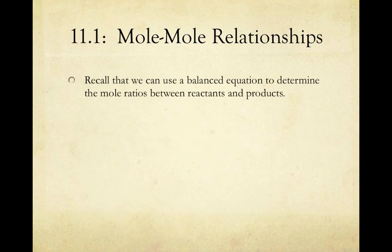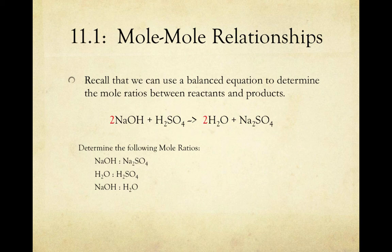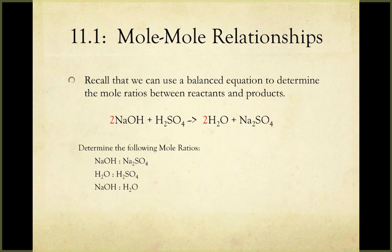Now let's translate this into a chemical equation. Take this equation here. If I balance the reaction, I know that it takes two moles of NaOH and one mole of H2SO4 to yield two moles of water and one mole of Na2SO4. So let's determine some mole ratios. In order to do so, we're going to need to look at the coefficients on each compound in the equation. The coefficients are like the amounts in a recipe.